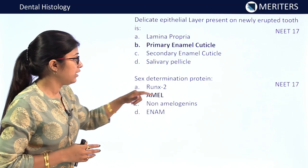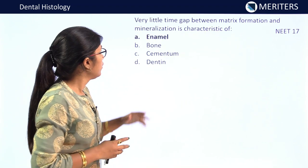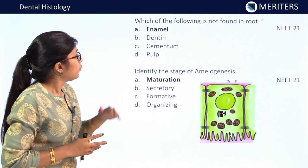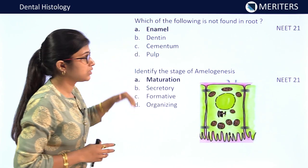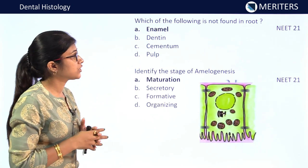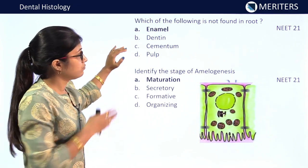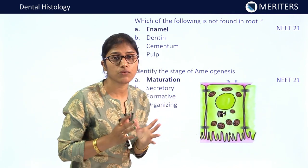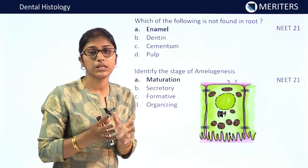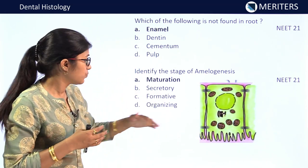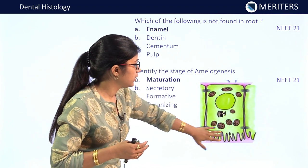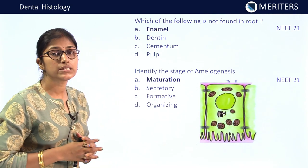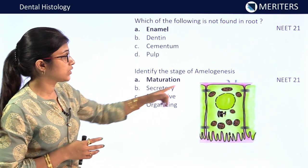Delicate epithelial layer present on the newly erupted tooth is primary enamel cuticle — NEET 2017. Sex determination protein is amelogenin — NEET 2017. A little time gap between matrix formation and mineralization is characteristic of enamel — NEET 2017. Which of the following is not found in root enamel? — basic question in recent NEET 2021, answer is enamel. An IBQ was asked to identify the stage of amelogenesis — a picture of ruffled-bordered ameloblast was shown and the answer was maturation stage — NEET 2021.